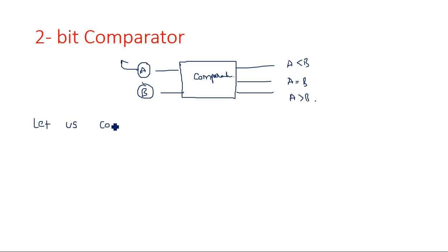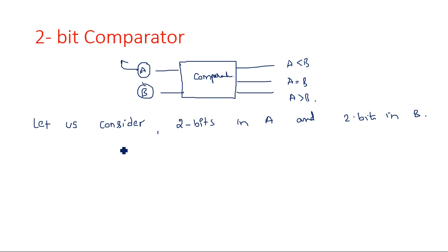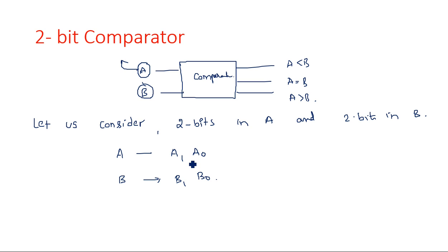Let us consider two bits in A and two bits in B. So A has two bits: A1 and A0, and B also has two bits: B1 and B0. These four bits will give you the total result of the output. Let us first start with the truth table.